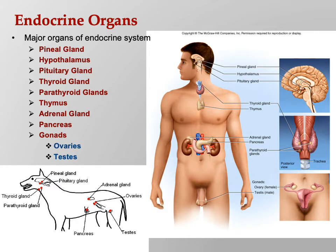The endocrine system is quite similar between mammals — look at the dog, essentially the same things. So there's a lot of conservation between mammals and hormones. Not a hundred percent, but a lot of things are similar.